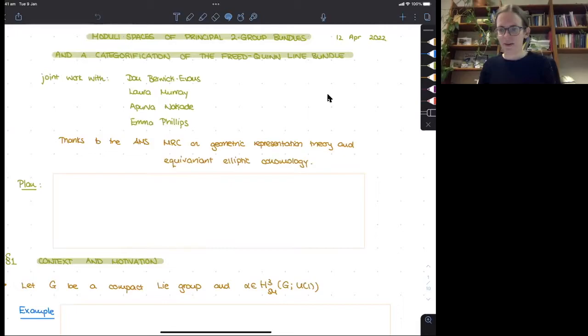Thank you for the introduction. I'm very happy to be here, and I hope that now that I'm in Sherbrooke I'll get a chance to interact with all of you more. Please feel free to interrupt - you can type in the chat. This is joint work with Dan Berwick-Evans, Laura Murray, Apurvan Nakata, and Emma Phillips. We started this project at an AMS MRC, a mathematical research community on geometric representation theory and equivariant elliptic cohomology. MRCs are very nice programs - if you are a young person and you get a chance to apply, I recommend it.